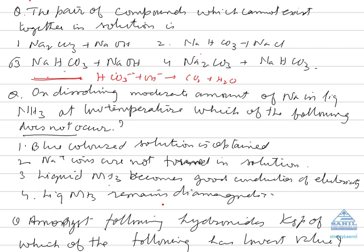but also they are responsible for the paramagnetic behavior. Liquid ammonia remains diamagnetic. This is wrong because due to the presence of unpaired electrons, they become paramagnetic.